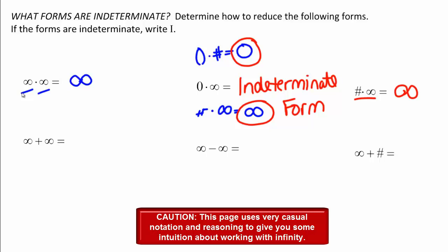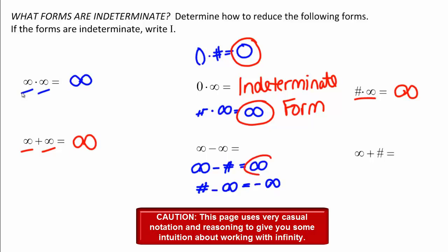Similarly, infinity plus infinity — take the biggest thing you can think of and add it to itself — it's still infinity. Infinity minus infinity, though, is a different story. If you take infinity and subtract a number, like infinity minus 3, that's still infinity. But if you take a non-zero number and subtract infinity, like 3 minus infinity, that's negative infinity. So again we have a conflict, and we have an indeterminate form.